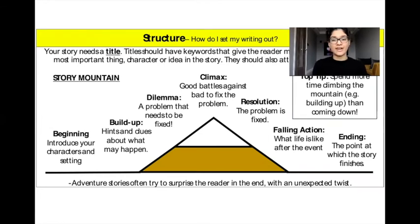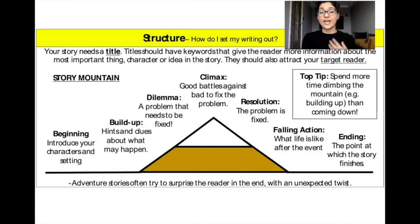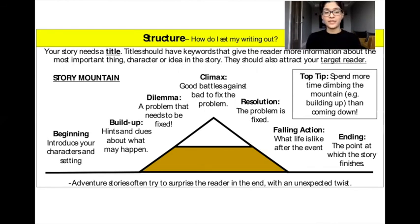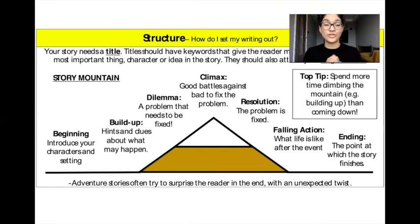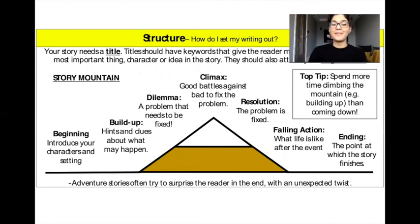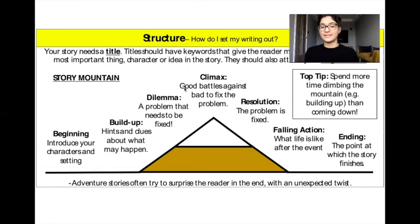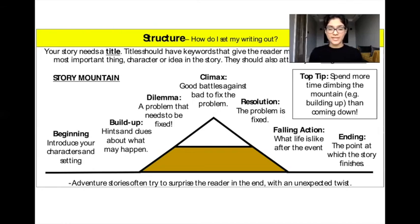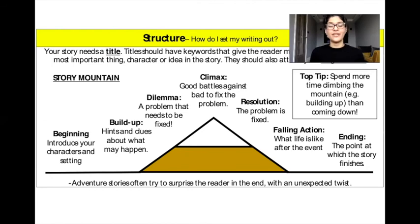Structure — how do I set my writing out? Your story needs a title. Titles should have key words that give the reader more information about the most important character or idea in the story, and should also attract your target reader. Spend more time building up your story mountain than coming down. Your story mountain goes from left to right: Beginning — introducing your characters and setting; Build-up — hints and clues about what may happen; Dilemma — a problem that needs to be fixed; Climax — good battles against bad to fix the problem; Resolution — the problem is fixed; Falling action — what life is like after the event; and Ending — the point at which the story finishes. Adventure stories often try to surprise the reader at the end with an unexpected twist.